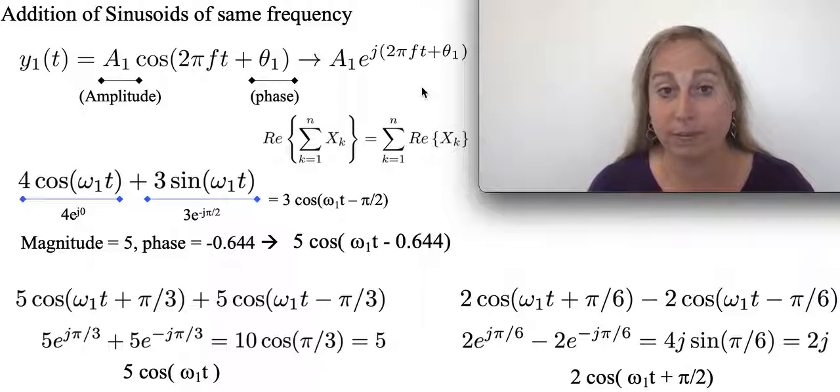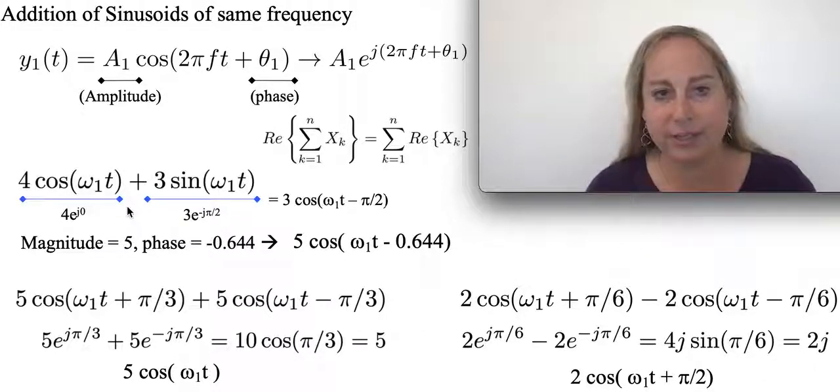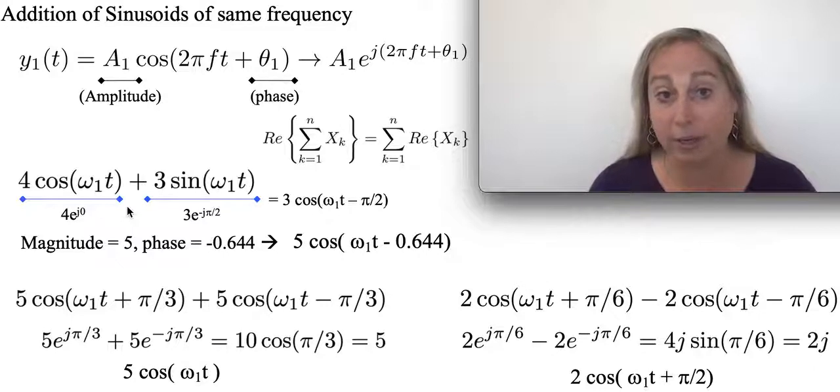That's very cool because I can just deal with that part and then pull everything together and invert it. So that's actually what you see. Take a simple example: I want to add 4 cosine plus 3 sine of the same frequency, omega 1, where omega is related to frequency, it's 2πf.